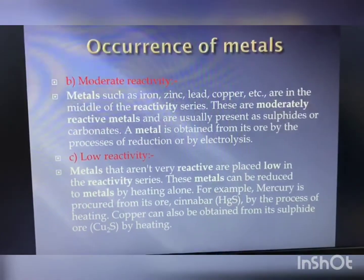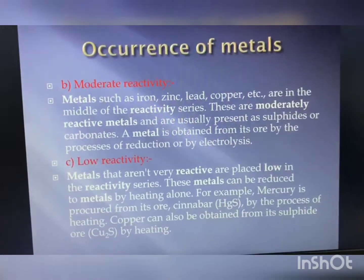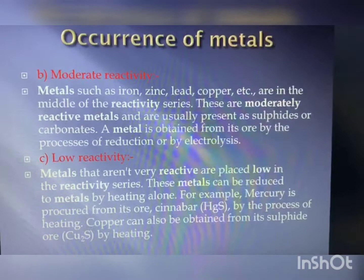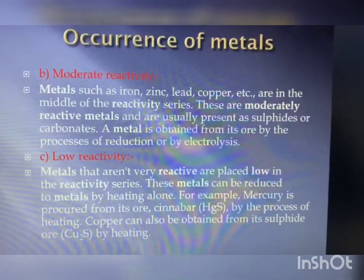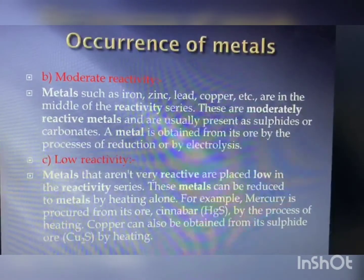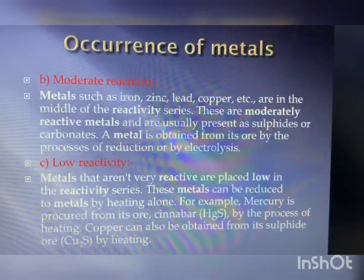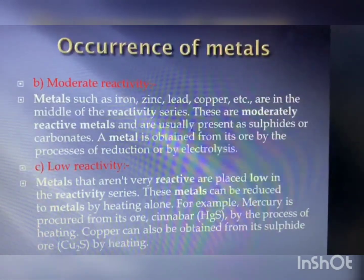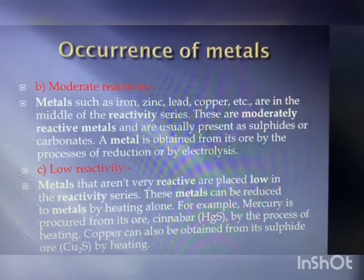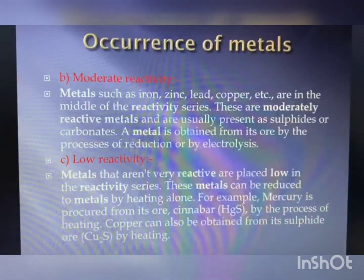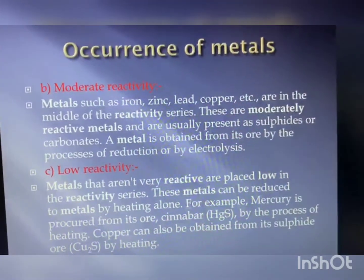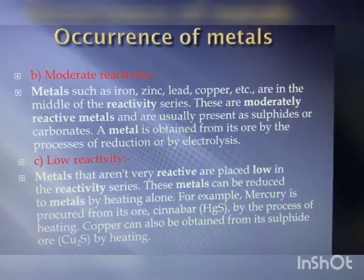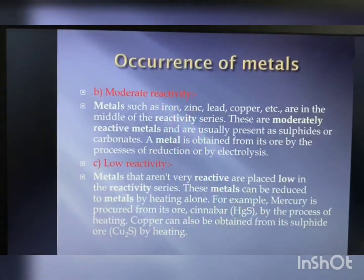Moderately reactive metals such as iron, zinc, lead, and copper are in the middle of the reactivity series. These are usually present as sulfide or carbonate ores. A metal is obtained from its ore by the process of reduction or by electrolysis. It is easier to obtain a metal from its oxide compared to its sulfide or carbonate, so prior to reduction, the metal sulfides and carbonates must be converted into metal oxides.